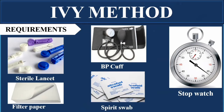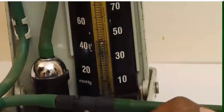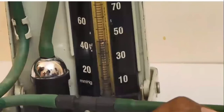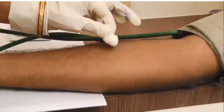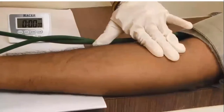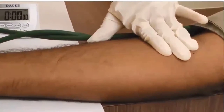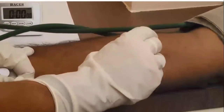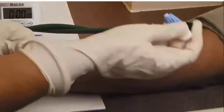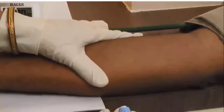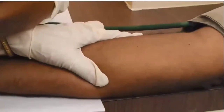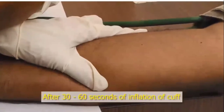In the IV method, the blood pressure cuff is applied on the upper arm to provide pressure for the accumulation of blood. Then, two to three pricks are made on the flexor surface of the forearm, with a distance of 10 to 15 centimeters between each prick. Precaution must be taken not to puncture the veins.